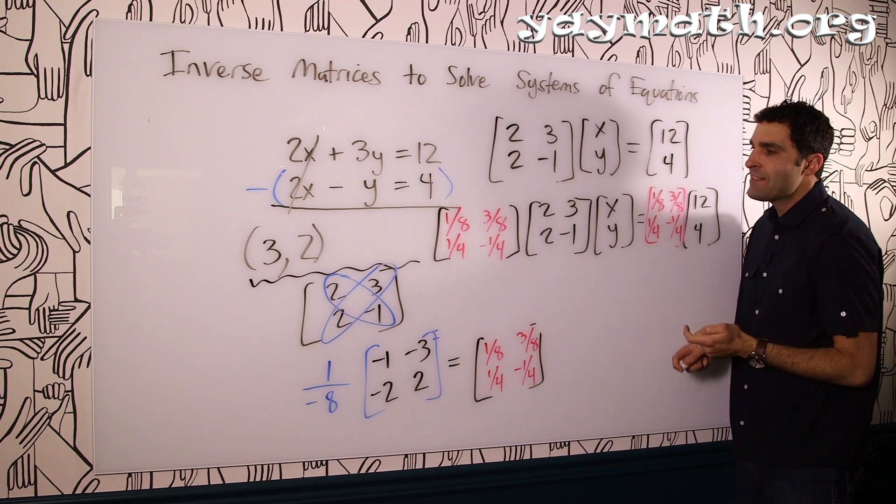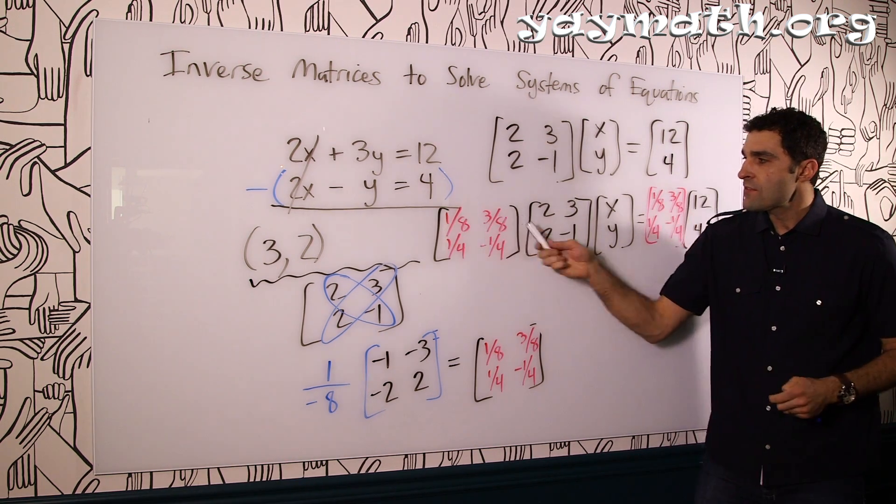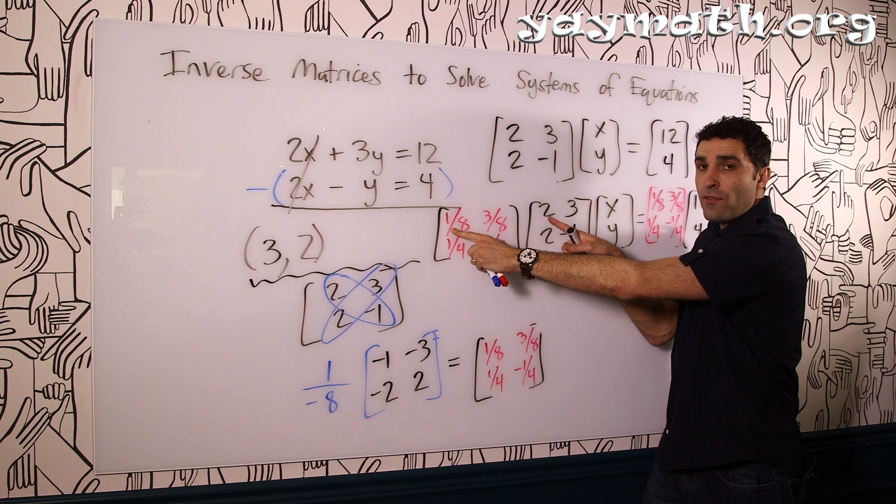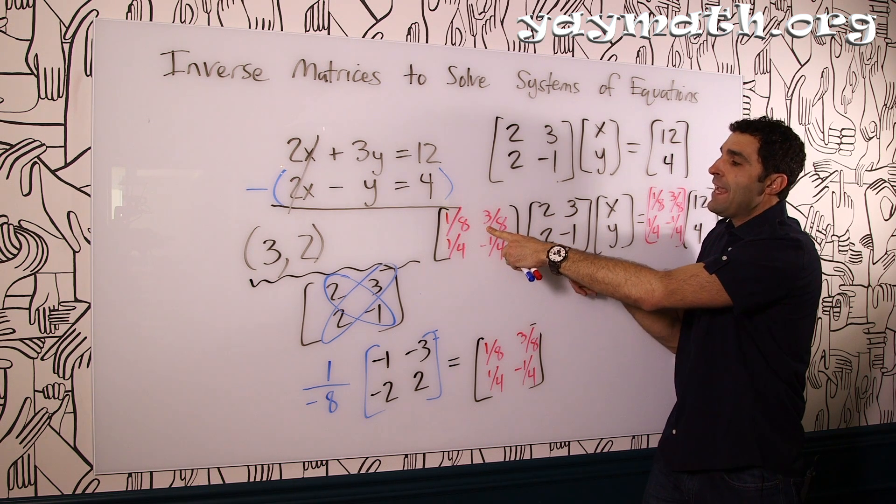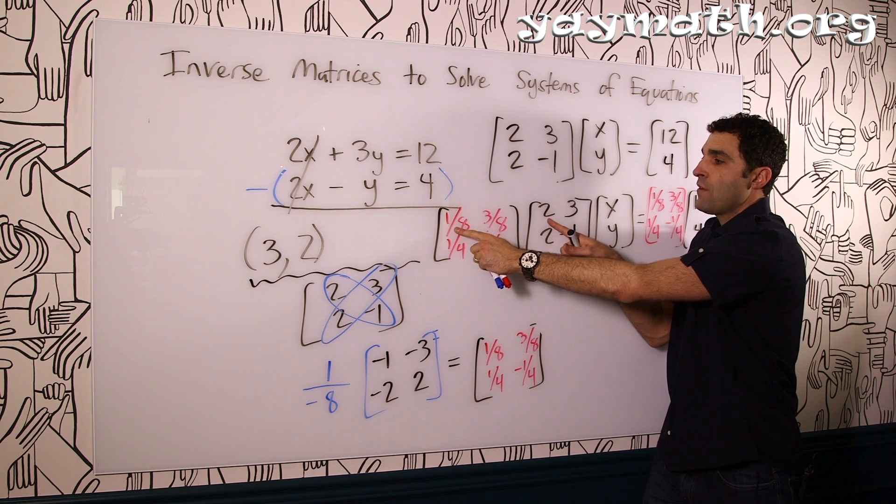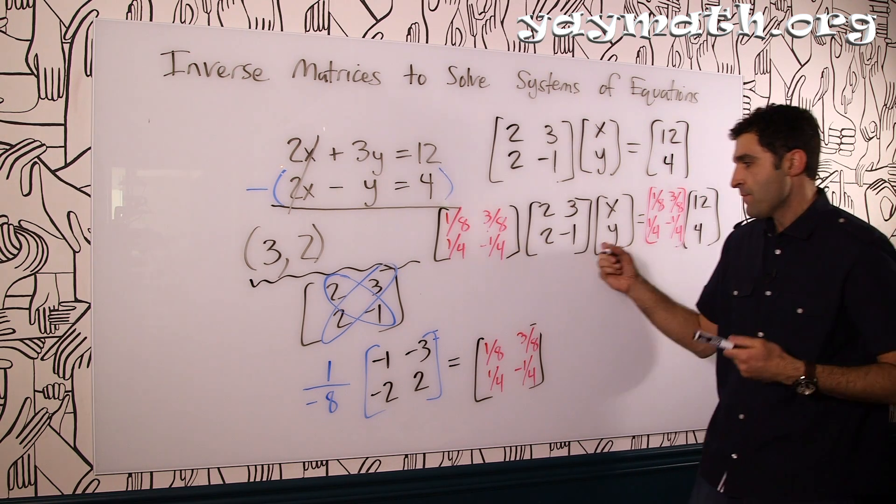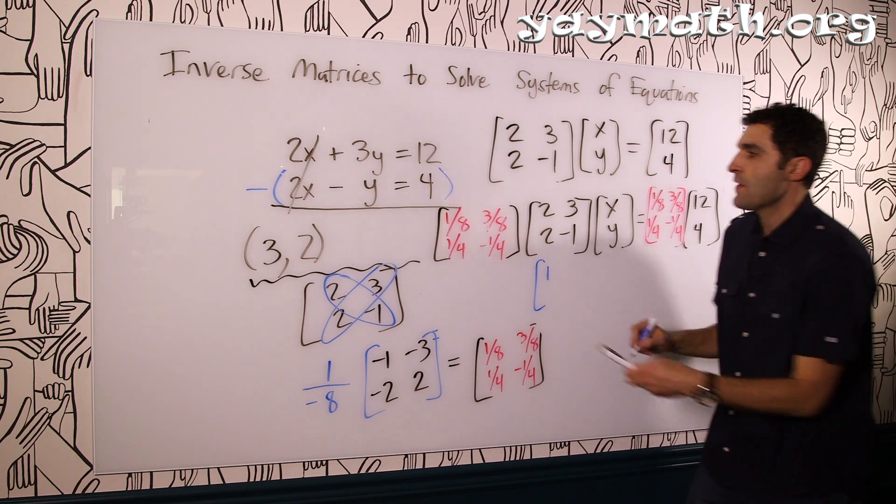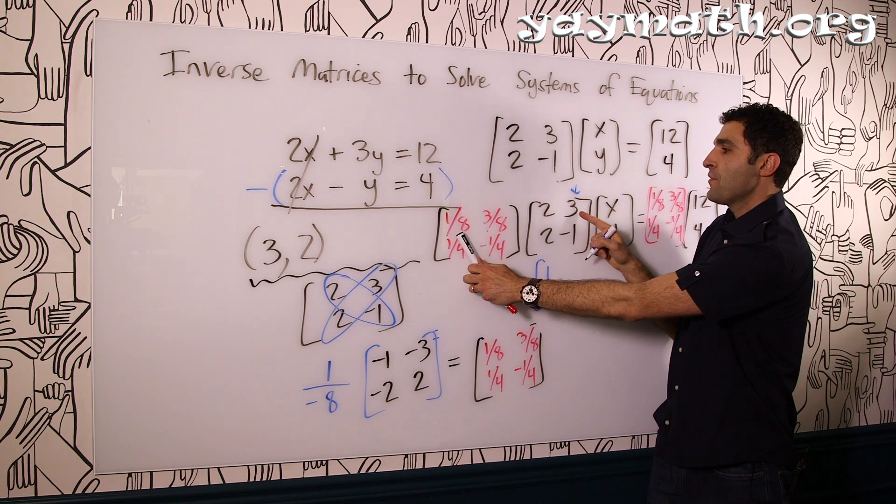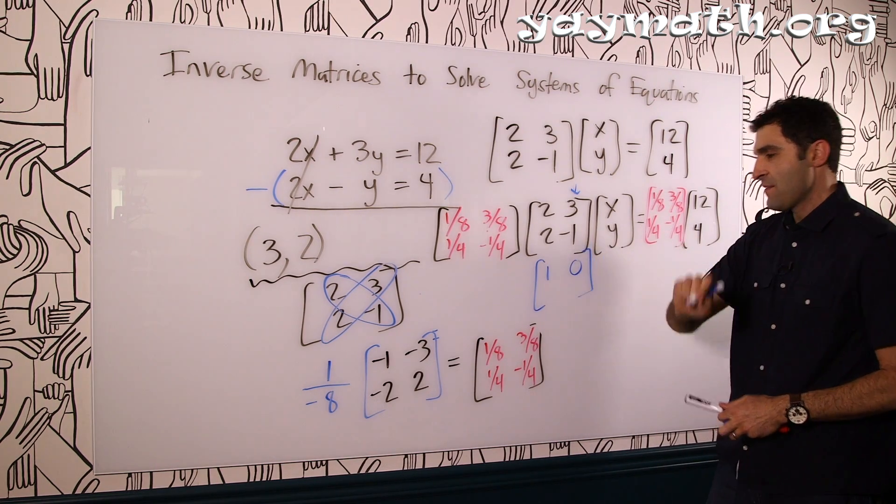Okay, having said that, you'll get used to it. Let's prove that multiplying these two turns this into the identity. It's kind of cool how it just melts away. Rows times columns, here we go. 1/8 times 2, that's 1/4, plus 3/8 times 2 is 6/8, which is 3/4. So this is 1/4 plus 3/4, none other than 1, just as we said. 1 goes here. And then rows by columns continuing, we're going to go into this column now. 1/8 times 3 is 3/8. 3/8 times negative 1 is negative 3/8. That goes away. That's zero.